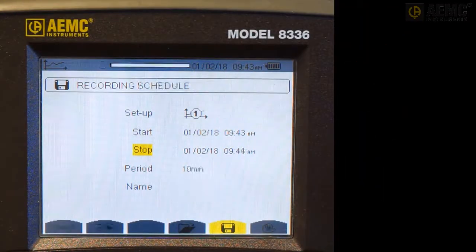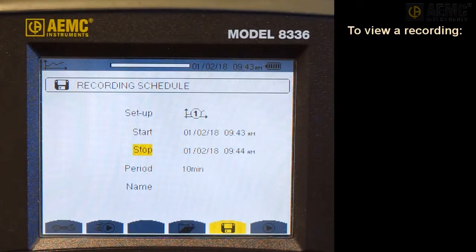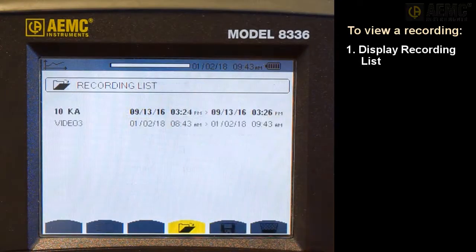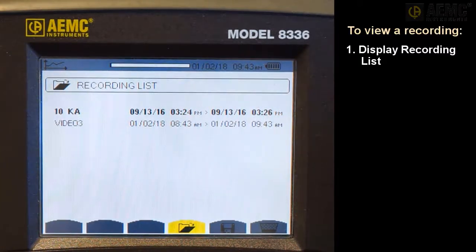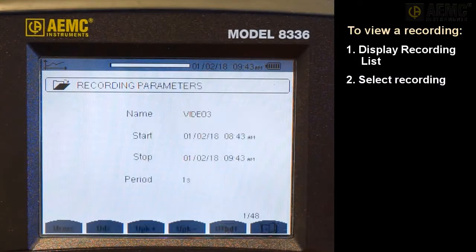When your recording is finished, you can view it in the instrument's recording list. If the Recording Schedule screen is displayed, press the yellow Function button under the Folder icon. If any other screen is displayed, press the Recording button. Either action displays the Recording List screen. If more than one recording is stored, use the arrows to select the desired recording, then press Enter to open it.